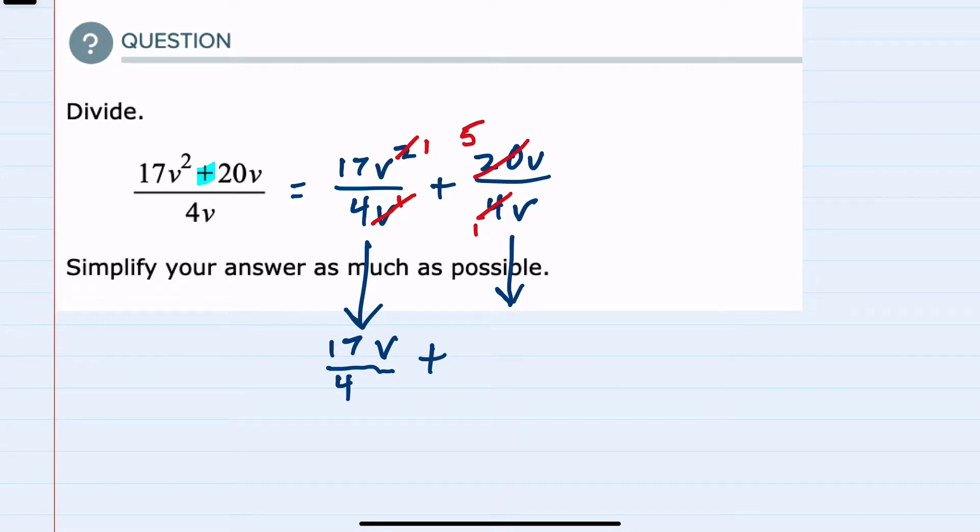And then for the v's I have one v in the numerator and one v in the denominator so those cancel.